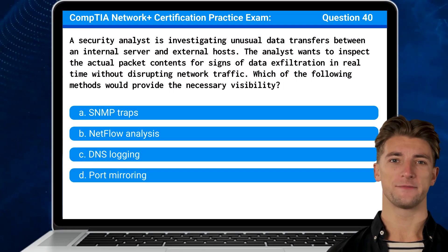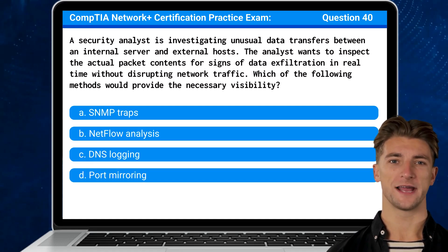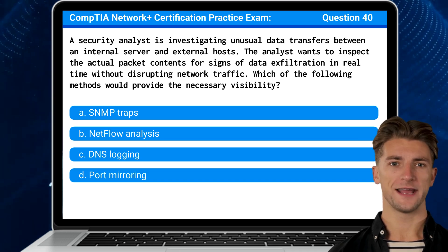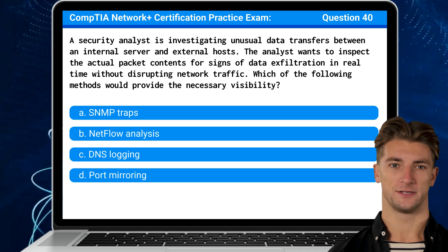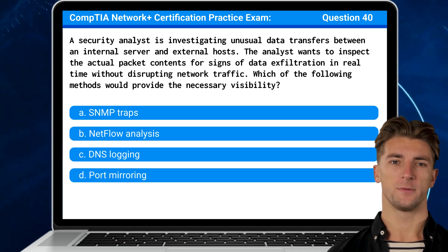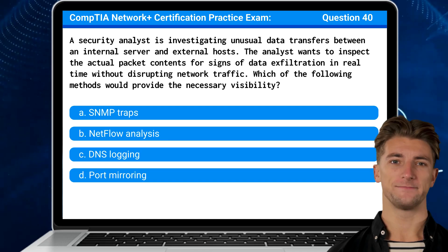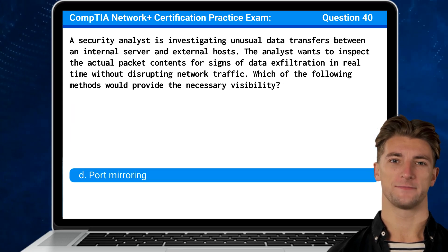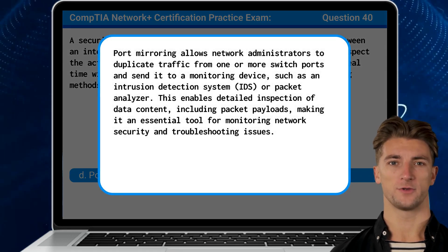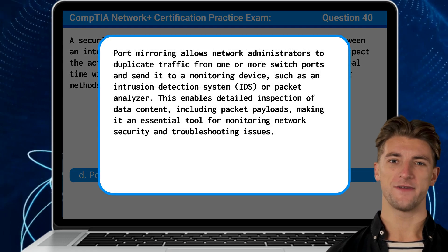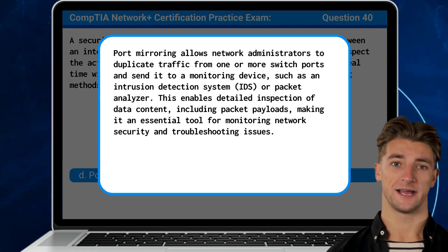Question 40: A security analyst is investigating unusual data transfers between an internal server and external hosts. The analyst wants to inspect the actual packet contents for signs of data exfiltration in real-time without disrupting network traffic. Which of the following methods would provide the necessary visibility? The answer is D: Port mirroring. Port mirroring allows network administrators to duplicate traffic from one or more switch ports and send it to a monitoring device, such as an intrusion detection system or packet analyzer.